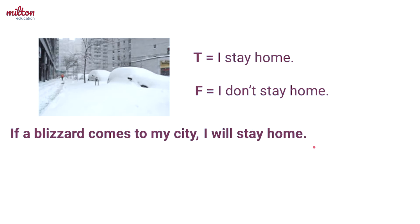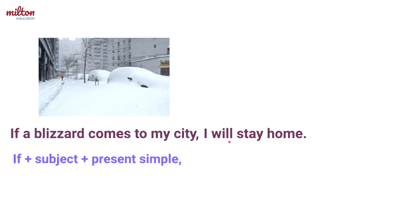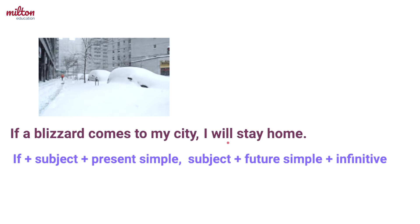Now let's take a look at the form of the first conditional. In general, the structure is: "if" plus the subject — which is "blizzard" in this sentence — plus the verb in the present simple tense, which in this sentence is "comes." Then, to separate the first and second parts of the sentence, you need a comma. After the comma, it's the subject of the second part, plus the verb in the future simple tense — which is "will" in this sentence — plus the verb in the infinitive form, which in this sentence is "stay."